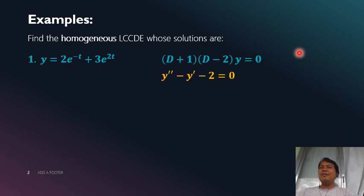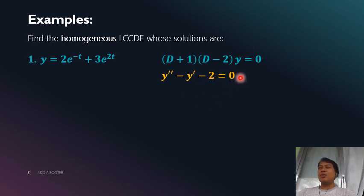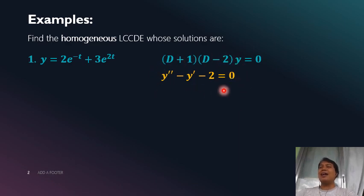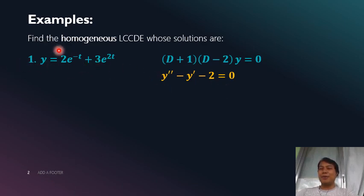We can now express this in terms of familiar notation: y'' - y' - 2y = 0. So we now have the differential equation. In our previous topics, we were usually given a differential equation like this and then solved for the solution. Now we do the opposite.